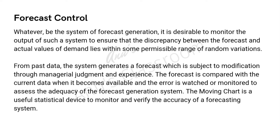Control is required when we find that the values are not lying within range and we need a course correction. From the past data, the system will generate a forecast, which will be subject to modification through managerial judgment and experience. This forecast we will compare with the current data whenever it becomes available, and the error is the difference between the forecasted value and the current value. This error is watched and monitored to assess the adequacy of the forecast generation technique. Usually, we can employ the moving chart, which is a statistical device used to monitor and verify the accuracy of a forecasting system.